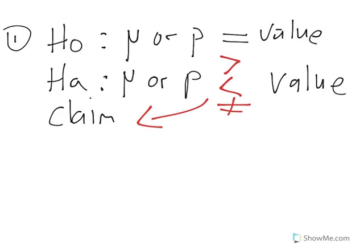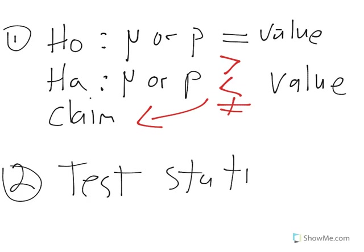So that's step one. Your null: your population parameter equals a value. Your alternative: your population parameter is less than, greater than, or not equal to that same value. Then we go to step two, where you calculate your test statistic. Each population parameter has different test statistics, and those I've posted in the announcements.